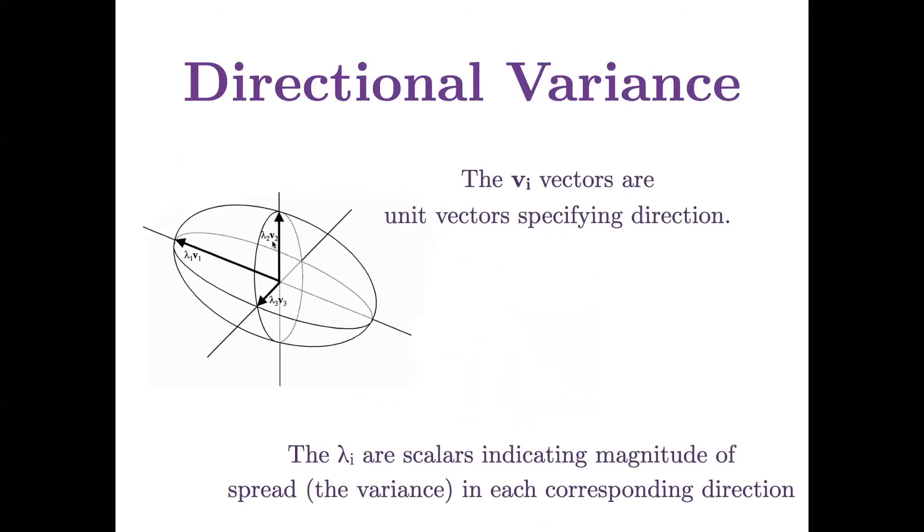These vi vectors here are unit vectors, meaning they have length one, just like we want from an orthonormal basis, and they are just specifying the direction. And the lambda i are scalars that actually indicate the magnitude of the spread. So they tell us the variance of the data in each corresponding direction. By corresponding, I mean that lambda 1 is the variance along v1, lambda 2 along v2, etc.